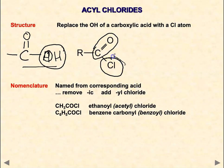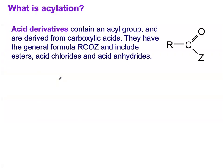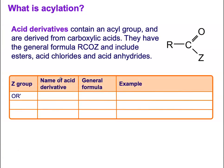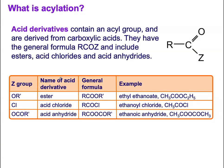An acyl chloride has a chlorine attached to the carbonyl group, making it really polar. It has a C=O bond and a C–Cl bond. An ester, by comparison, has an O–C–R group attached there; it is the Cl that makes it an acyl chloride.